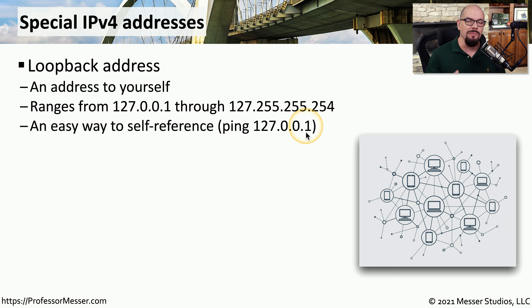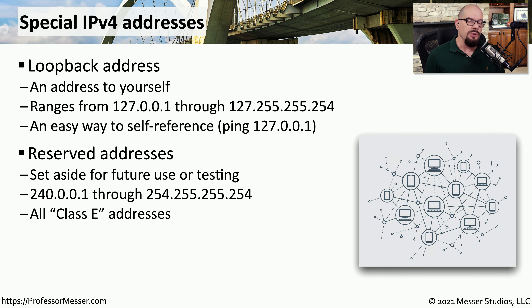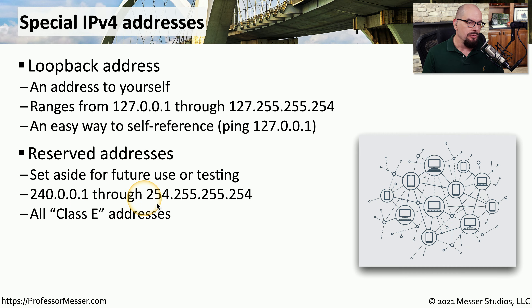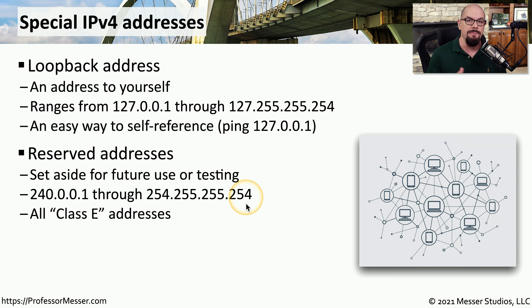If you ping the loopback address and get no response from your local computer, there must be some problem with the TCP/IP stack inside your operating system. There is also a block of addresses set aside as reserved addresses. When we talk about classes of addresses, these are Class E addresses, in a range from 240.0.0.1 through 254.255.255.254. These reserved addresses should not be configured on a local machine or anything on your production network, and it would be unusual to ever run across a reserved address because everyone understands they should not be used.